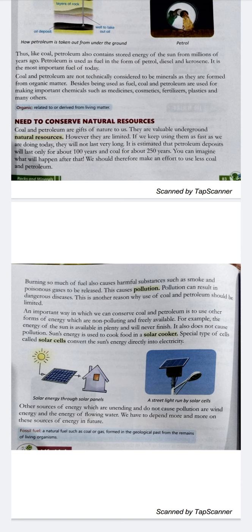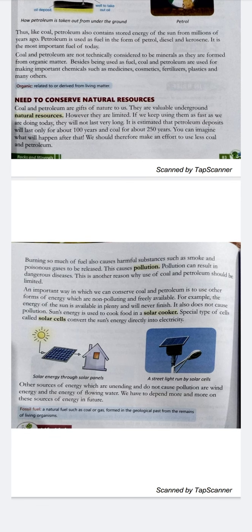We should reduce the use of coal and petroleum and switch to other forms of energy which are non-polluting and freely available, such as solar energy, which can be used to cook food in a solar cooker, and solar cells. We can also use wind and water energy sources which do not cause pollution. That's all for this chapter. Thank you, students.